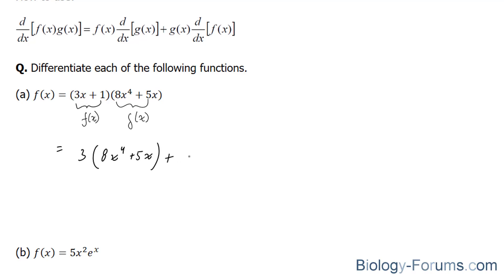Then we're going to keep this the way it is, 3x plus 1 multiplied to the derivative of that, which is equal to 8 times 4, which is 32. This reduces by 1, and the derivative of this is equal to 5.